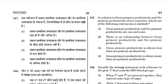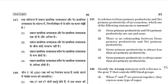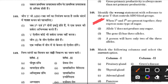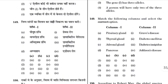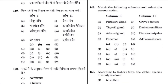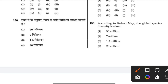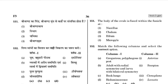In relation to gross primary productivity and net primary productivity — the rate of production of organic matter during photosynthesis. Answer for 147 is 4. Identify the wrong statement with reference to the gene 'I' that controls ABO blood group: IA and IB together express the same type of sugar. Match the following — answer for 149: according to Robert May, global species diversity is about 7 million species.